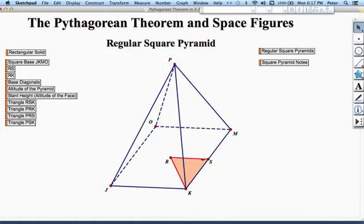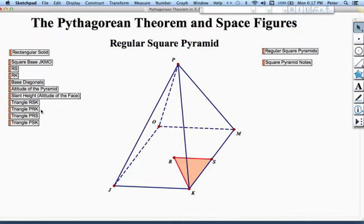Now if I couple that with RK, which is half the length of one of the base diagonals, I form triangle RSK. And triangle RSK has its right angle here at S. The hypotenuse is RK. And each of the legs is going to be half of one of the base edges. So it is an isosceles right triangle.